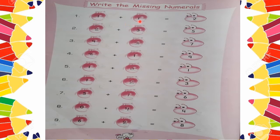The first one: there is 1, then a space, then 2. What number do we add to 1 to get 2? We add 1. So 1 plus 1 is equal to 2. Here you will fill in 1.